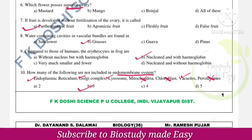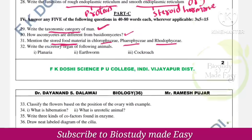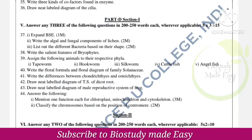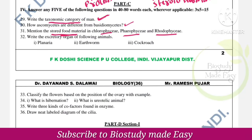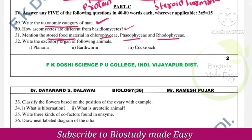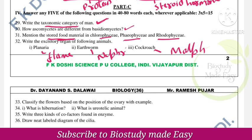Excretory organs of the following animals: Planaria — flame cells; earthworm — nephridia; cockroach — Malpighian tubules. These are very important from the animal kingdom chapter — each phylum has a specific excretory organ.